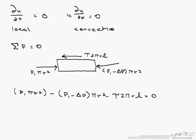So if we divide through by pi r squared and simplify, we end up with delta P minus 2 times tau times l over r equals 0. Or delta P per length equals 2 times tau divided by r.